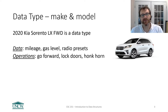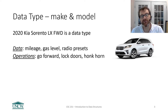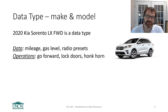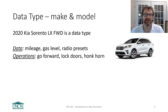I would argue that you could view the make and model of a car as a data type. Here's a 2020 Kia Sorento LX front-wheel drive. This is a car, but we want to think of it as a data type that represents this car. Data types have data and they have operations. What's the data in a car? There's its mileage, how much gas is in it, the presets on the radio, the VIN — the vehicle identification number. These are all data points that are kind of stored on the car somewhere.